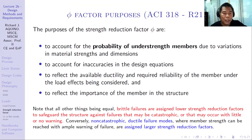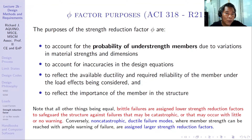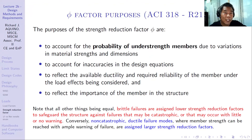Lastly, the strength reduction factor reflects the importance of the member in the structure. The more important the member, the smaller the value of phi. For example, columns have phi values from 0.65 to 0.75, while beams normally have phi equal to 0.9.